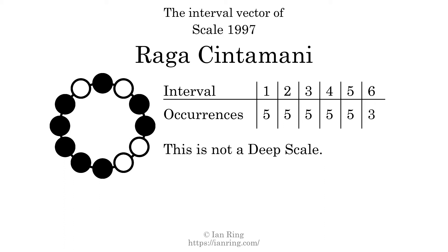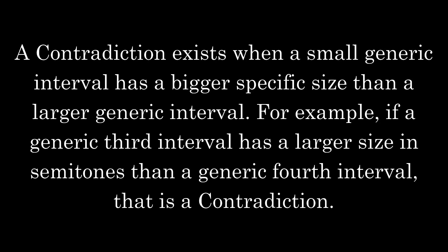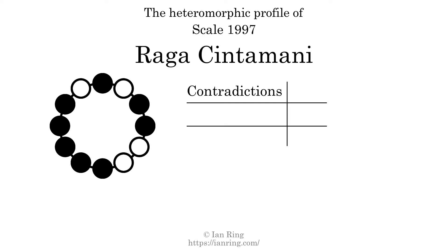Each interval does not appear in this scale a unique number of times, so this is not a deep scale. Heteromorphisms are comparisons between every interval in a set. They can be classified as contradictions, ambiguities, and differences. A contradiction exists when a small generic interval has a bigger specific size than a larger generic interval — for example, if a generic third interval has a larger size in semitones than a generic fourth interval. The number of contradictions in this scale is 30.